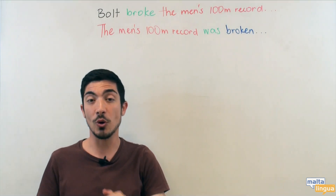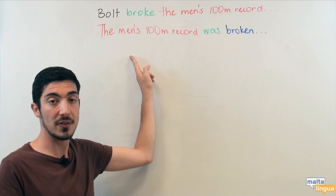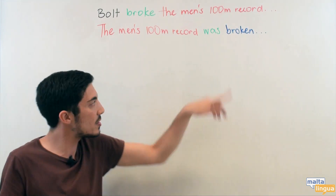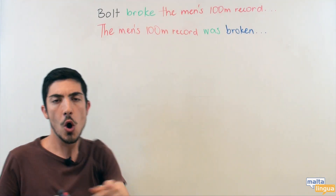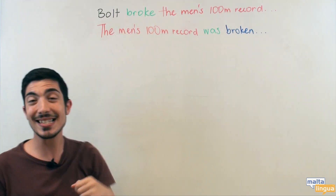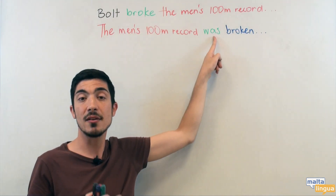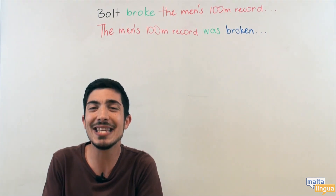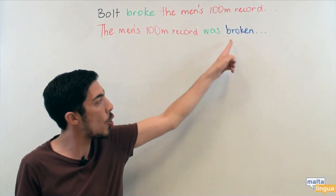Take the sentence: 'Bolt broke the men's 100 meter record in 2009.' We're going to start with the record because the record is what's important. Now, what form of the verb 'to be' do I use? Always think about the main verb in the active sentence — in this case 'broke'. Broke is the past simple form: break, broke. So the past form of 'to be' is 'was'. The participle will never change — so 'was broken', 'is broken', 'will be broken': no difference, always 'broken'.